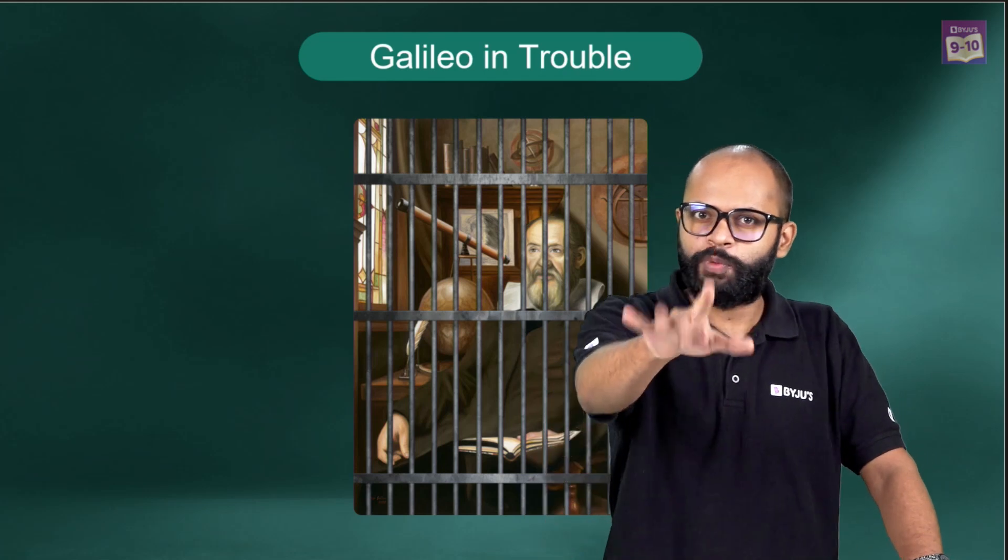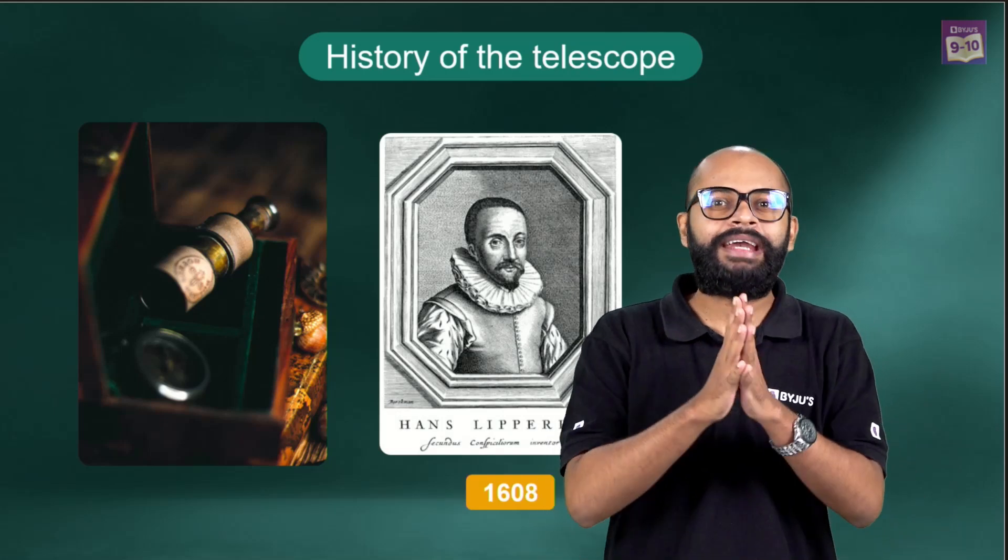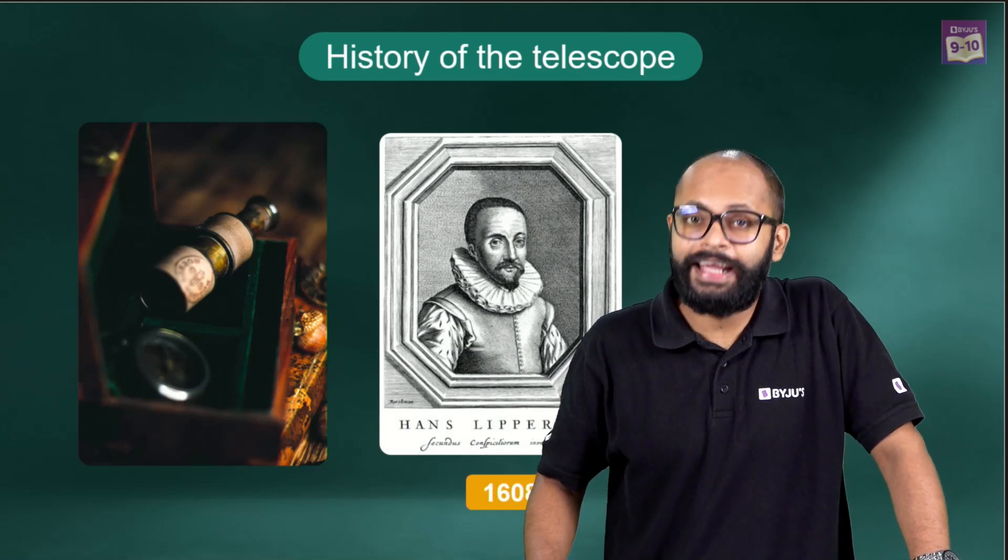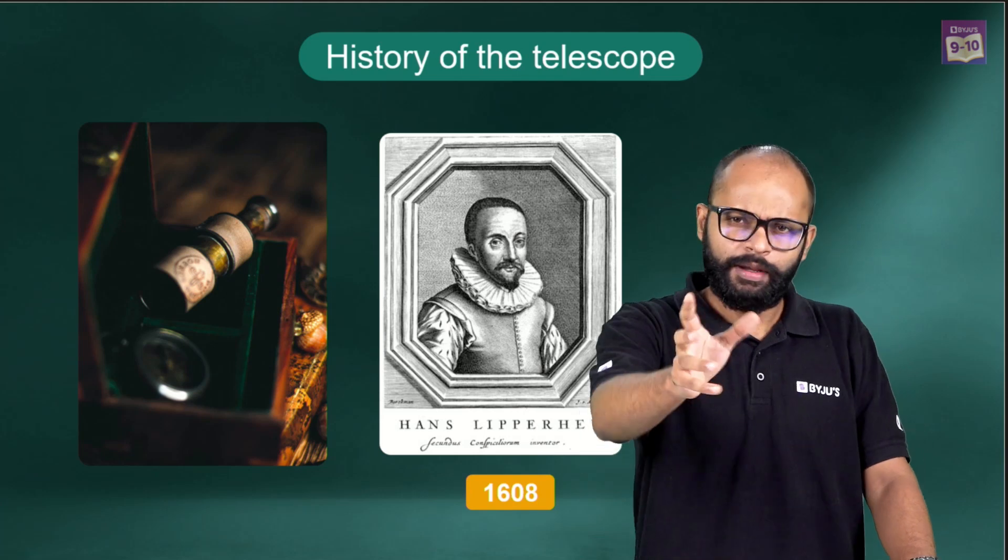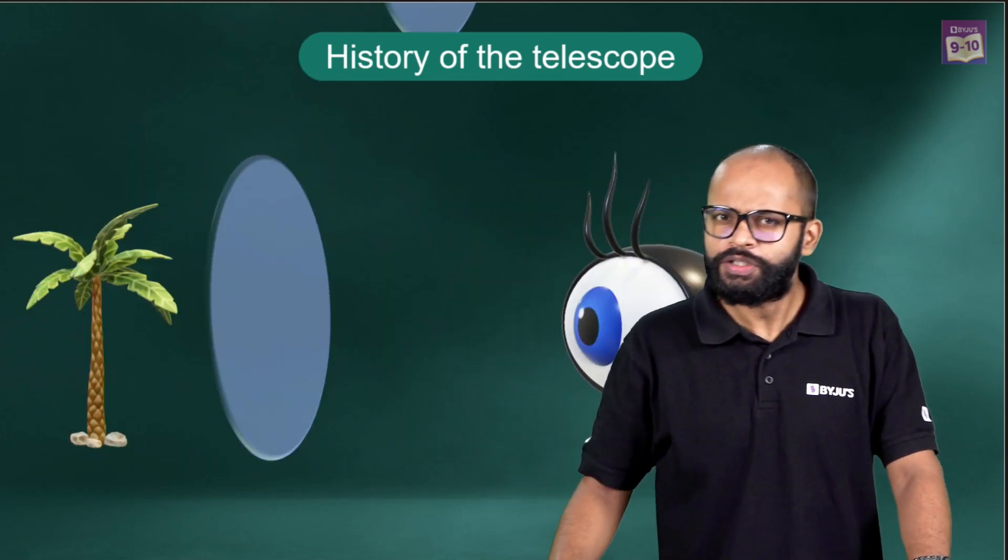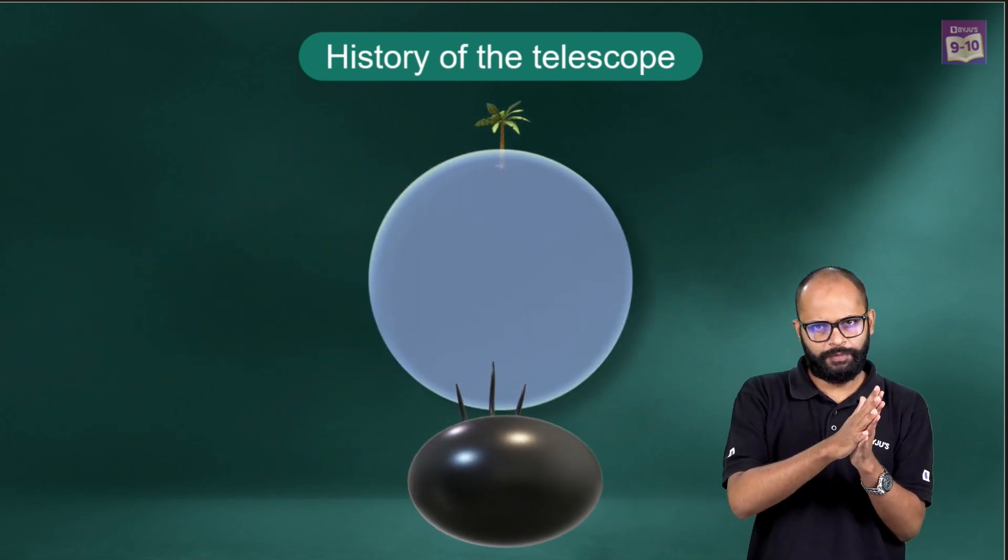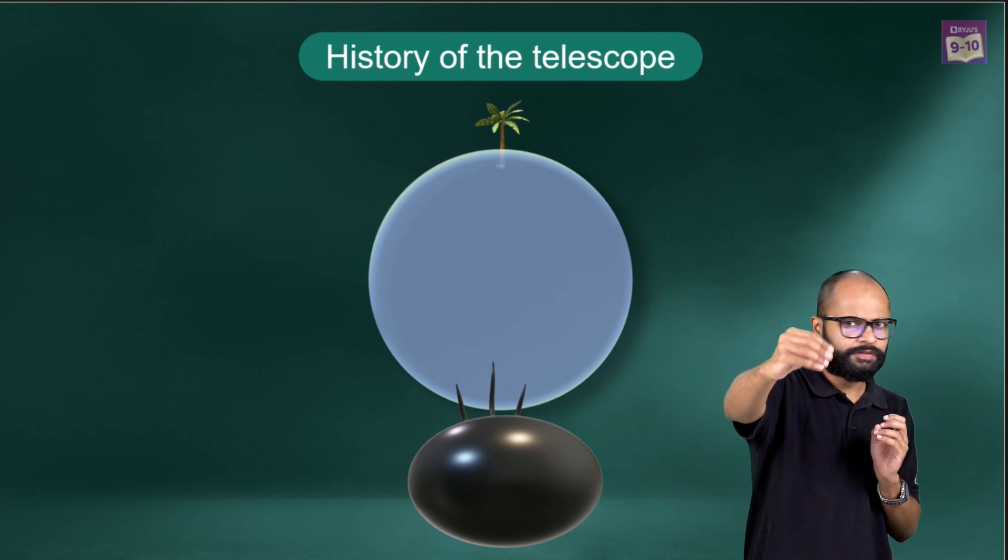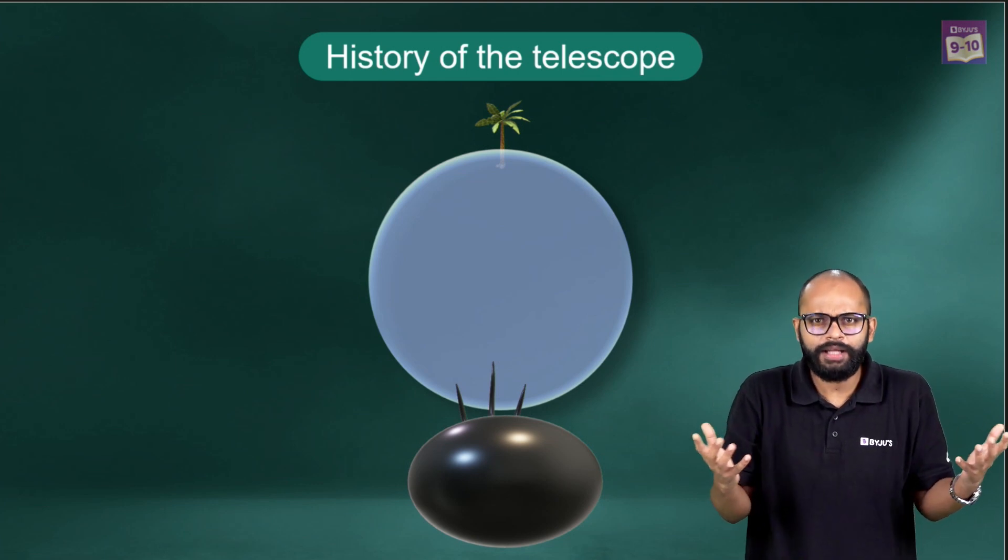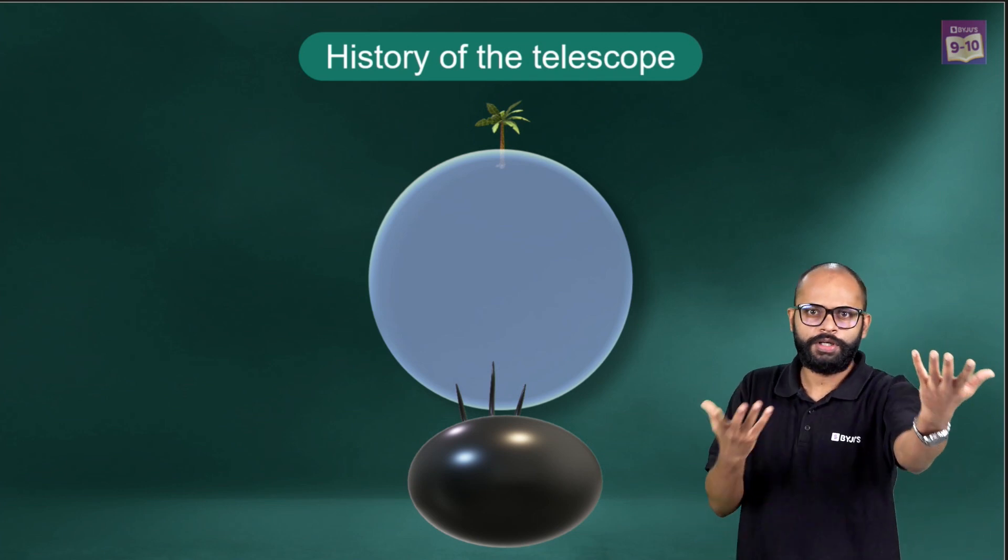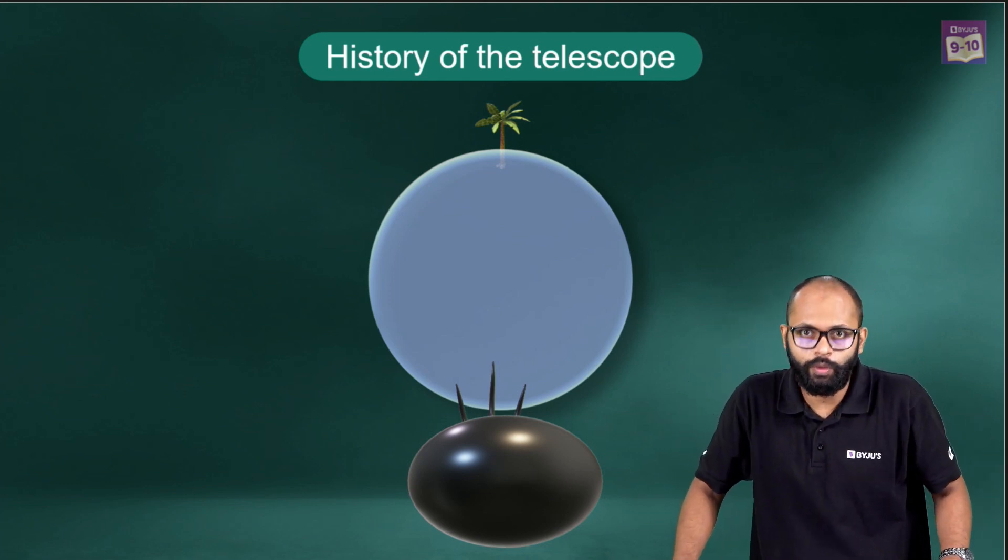Telescopes existed before Galileo. Hans Lippershey made a telescope in 1608. He observed that if he combined two lenses in a specific arrangement, he could see far objects closer to him. That's what we need right, to see far objects closer to you. That's what we require.